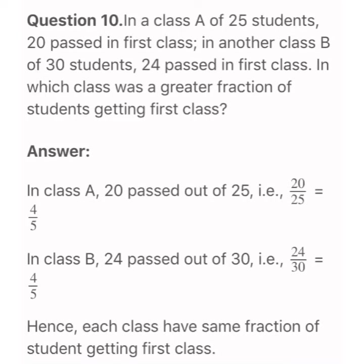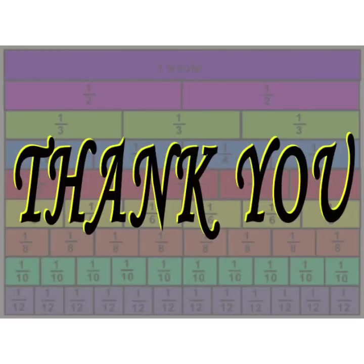In both classes, the fraction of students who passed with first class is 4 by 5. Hence, each class has the same fraction of students getting first class. This was the end of our exercise. Write all these answers in your maths notebook, and we will meet in the next video with new concepts.